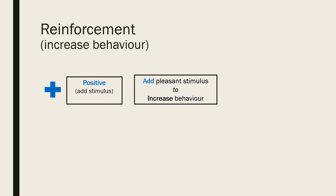Positive reinforcement strengthens a behaviour by providing a consequence an individual finds rewarding, such as praise or a direct reward. For example, if your teacher gives you five dollars each time you complete your homework — a reward — you will be more likely to repeat this behaviour in the future, thus strengthening the behaviour of completing your homework.